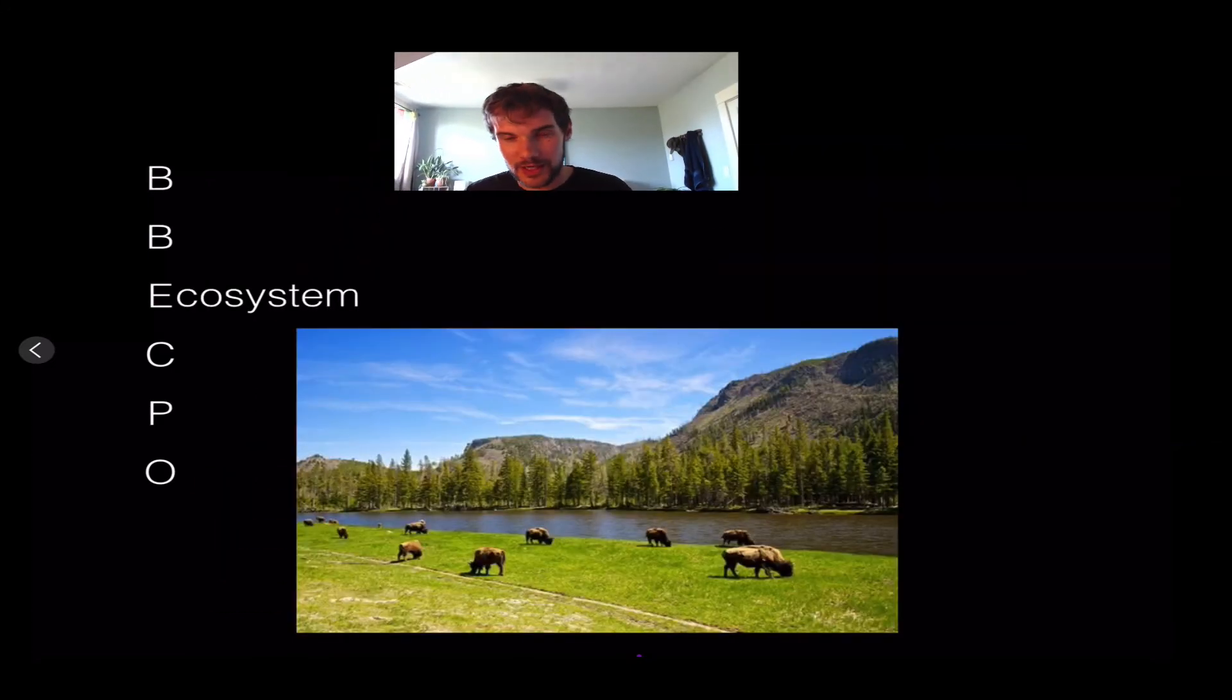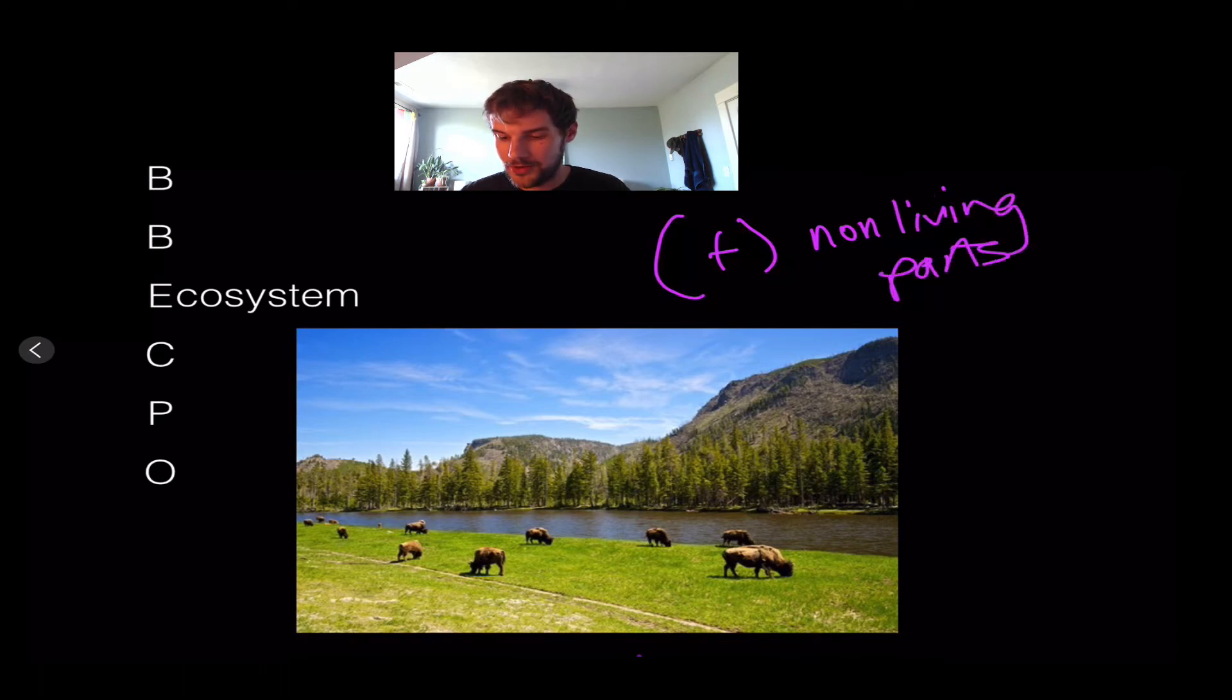The ecosystem is everything we've talked about plus the non-living parts. For example, bison grazing along a river - the water is a non-living part included in the ecosystem. If there's little water, the ecosystem will be very different compared to the Northwest where we have lots of water, which influences what animals and plants we see.